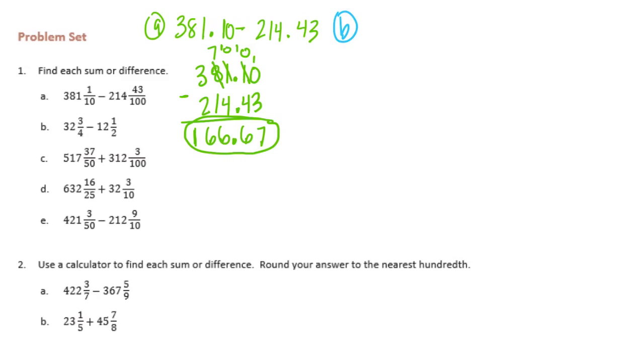Let's do B. 32 and 3 fourths minus 12 and a half. For this neither of them are in tenths or hundredths form, but I see that 3 fourths and 1 half, I can make 1 half into 2 fourths, and then this is an easier problem to subtract with fractions. Then I'll only have 1 fraction to turn into a decimal. So let's do 32 and 3 fourths minus 12 and a half. I can line that up as a subtraction problem too. Remember 1 half was 2 fourths. So 3 fourths minus 2 fourths is 1 fourth. Subtract, we get 20 and 1 fourth.